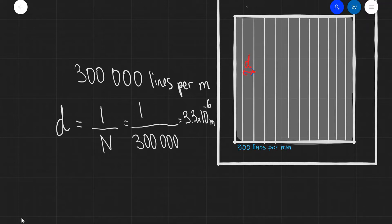We can define the line separation d as 1 over the number of lines per meter. In this zoomed-in version, d is the distance shown here in red. That equals 1 over 300,000, which is 3.3 times 10 to the minus 6 meters.